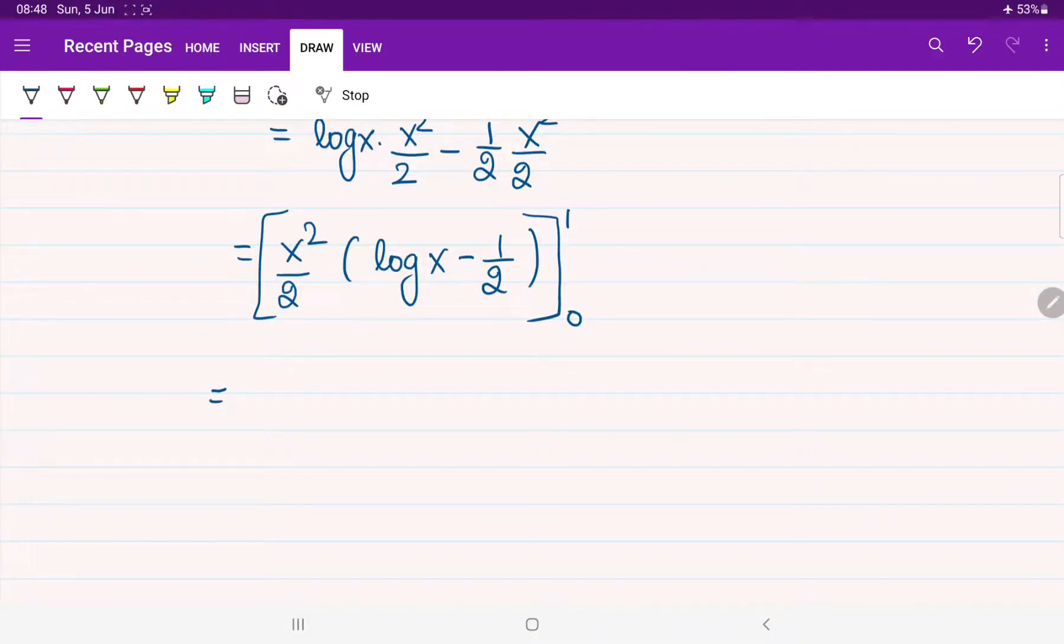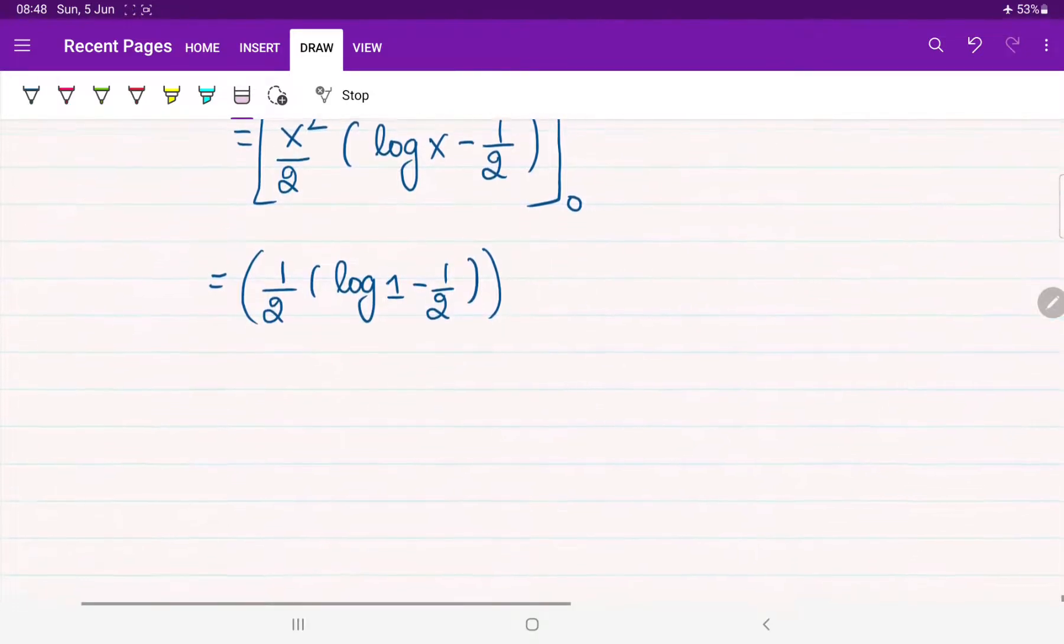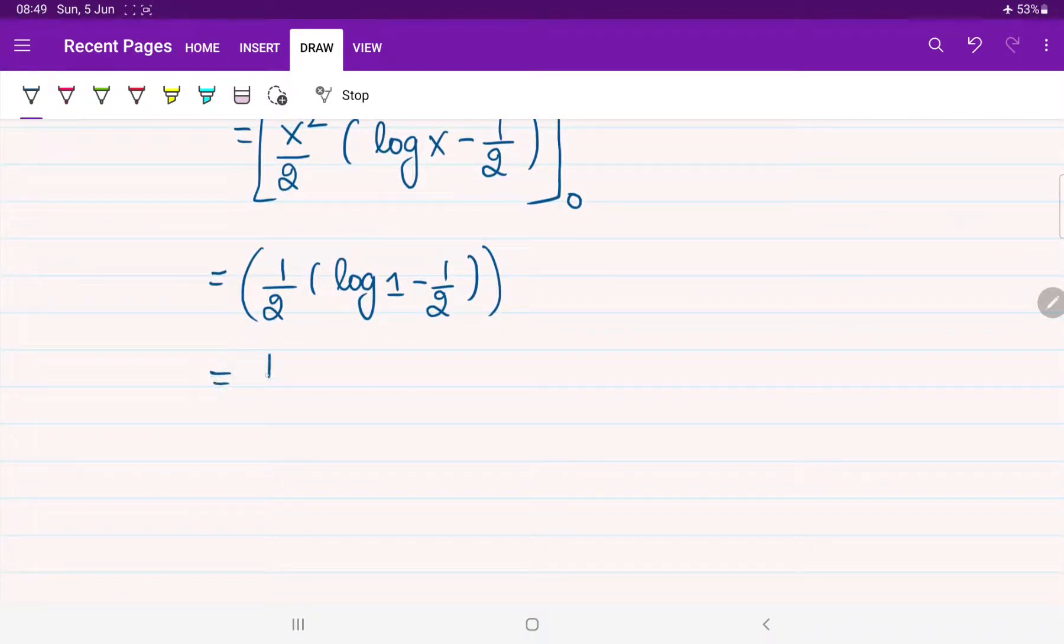Now you can substitute. Let us go with the upper limit first. Upper limit is 1, so 1 square by 2 will give you 1 into log 1 will give you 0 minus 1 by 2, upper part is over. After that, we will go to lower part. Lower limit, 0 square by 2, that itself will become 0. After that, what is the point of discussing about the inner portion? That overall limit is going to be approaching 0 only. So directly, I can put that value is going to be 0. So I am removing the whole second part, that will be approaching 0 already. So this will be 1 by 2. What is the value of log 1? 0 minus 1 by 2.